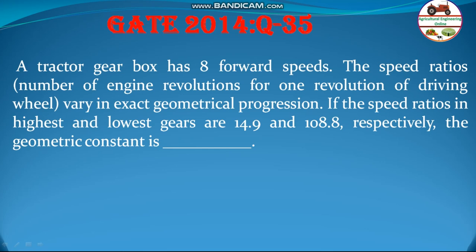a tractor gearbox has 8 forward speeds. The speed ratios, or number of engine revolutions per one revolution of driving wheel, vary in exact geometric progression. If the speed ratios in highest and lowest gears are 14.9 and 108.8 respectively, the geometric constant is dash.